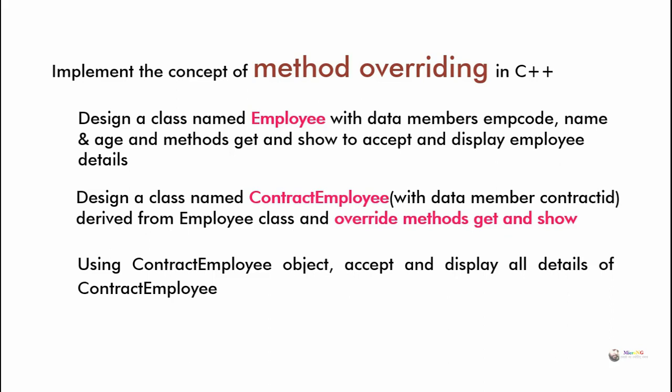In this program we have to create two classes: the first class is named Employee and another class named ContractEmployee, which is derived from the Employee class. In the base class Employee we have three data members — EMP code, name, and age — and two methods, get and show. The methods get and show must be overridden in the derived class ContractEmployee.